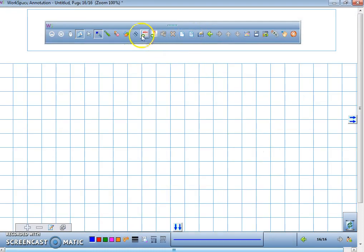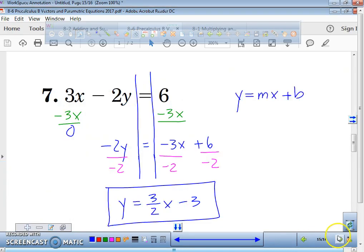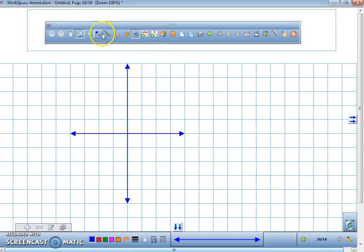So right now, what we're going to do is we're going to graph this. So right now, we're just going to make an x-axis and a y-axis. We'll go back to y equals 3 over 2x minus 3. What's my y-intercept, everybody? My y-intercept is at negative 3. Very good.